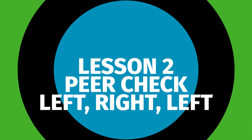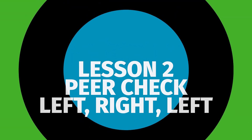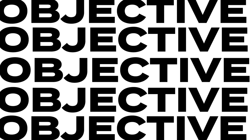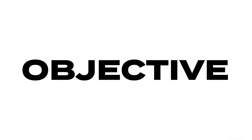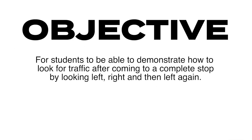Welcome to the peer check left right left lesson. The objective of this lesson is for students to be able to demonstrate how to look for traffic after coming to a complete stop by looking left, right, and then left again.